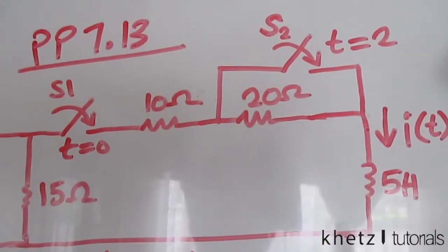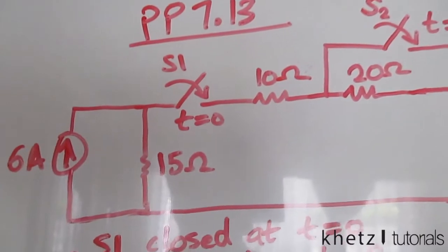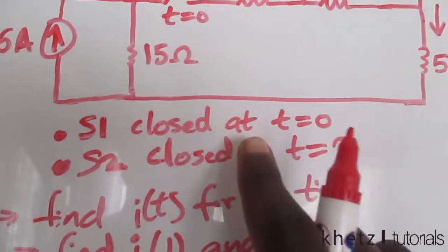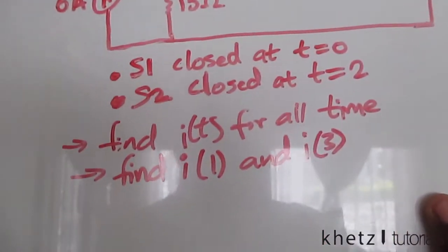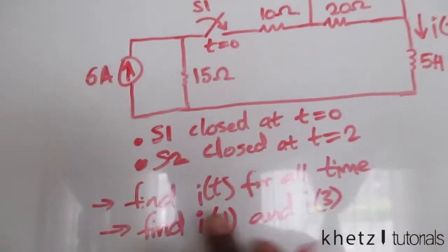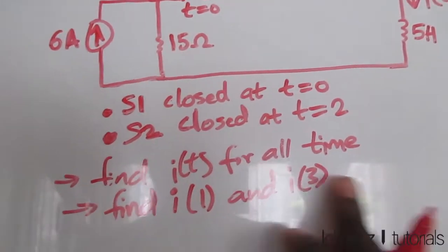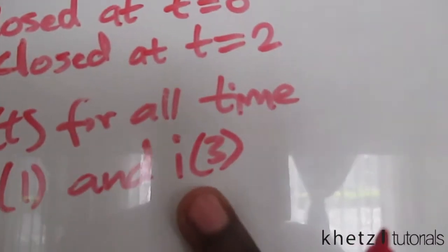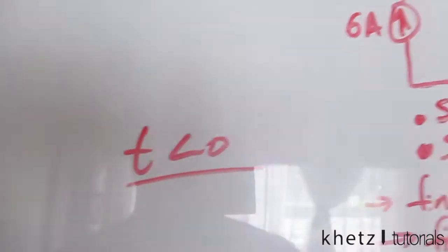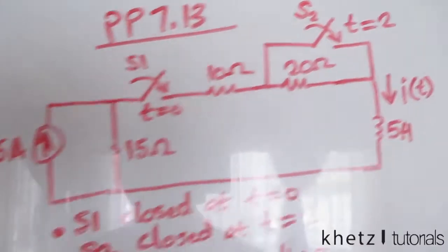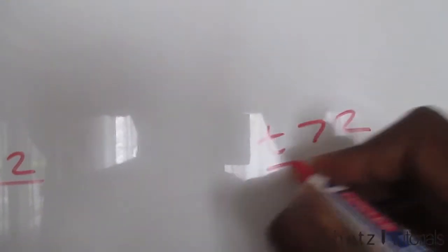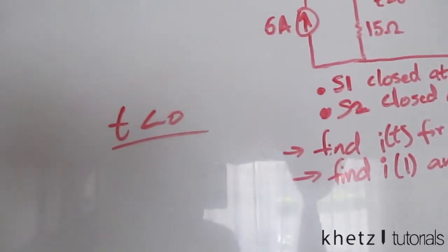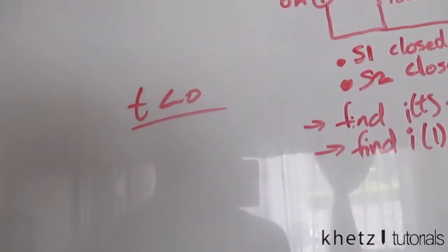We have S1, which is this switch over here — it's closed at time t = 0. We have S2 which is closed at time t = 2. These switches close at different times and we have to compensate for that. We need to find i(t) for all time, i(1), and i(3). The notable intervals are: t < 0, 0 < t < 2, and t > 2.